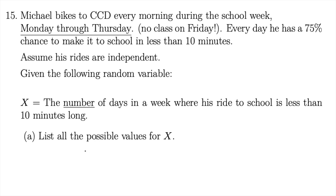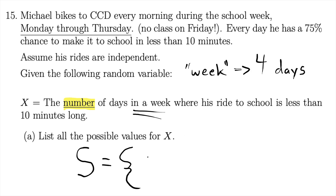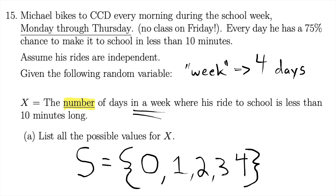That's the sample space, and I could use a capital S to describe it. x is a number — anything in this sample space is going to be a number. The smallest x could be is zero and the most x could be is four, and it could be any number in between. So the sample space looks like {0, 1, 2, 3, 4}.